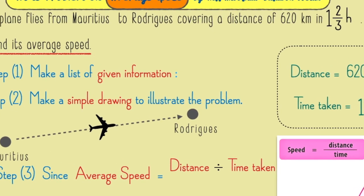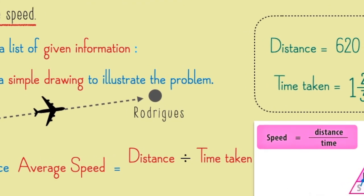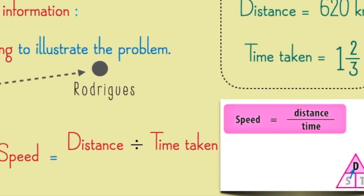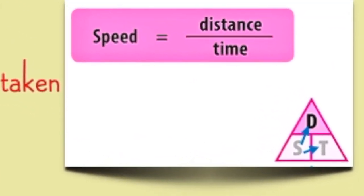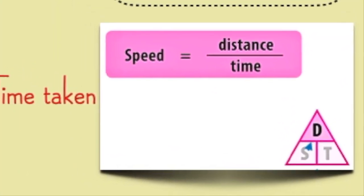Here is a little tip for you. You can draw a little triangle containing S, D and T, just like the one shown here. This can help you remember the formula for speed, time and distance.